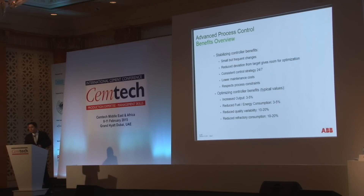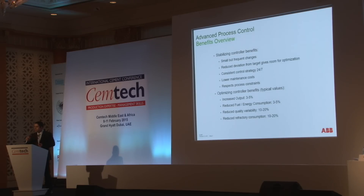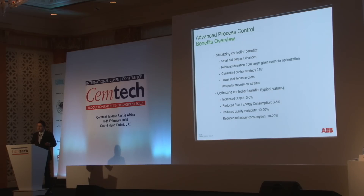So what are the benefits from stabilizing the process? We will have small but frequent changes — doing small changes all the time, instead of the operator doing big changes not very often. We will reduce the deviation from the target. We will have the process targets and we will be working close to those targets, keeping the process stable. We will have the same operation, the same way to operate the kiln or the mills, 24/7. There is no variation, because we all know that each operator has their own style — one is more aggressive, the other is a bit slower. This is human nature. We will have a standard operation.